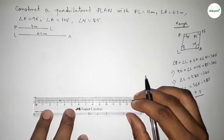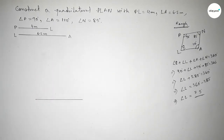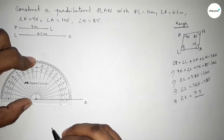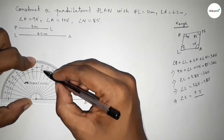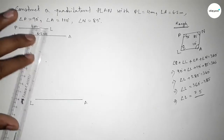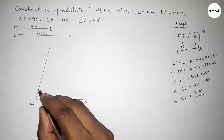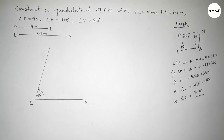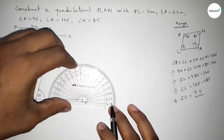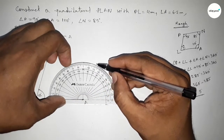First we have to draw the line LA equal to 6.5 centimeters, taking point L and point A. Now drawing a 75 degree angle at point L using a protractor — counting the angle to 75 degrees. Marking this and joining the line to get a 75 degree angle. So this angle is 75 degrees.